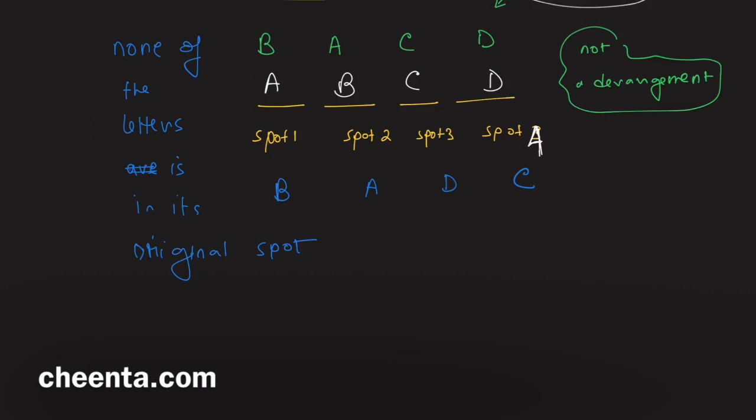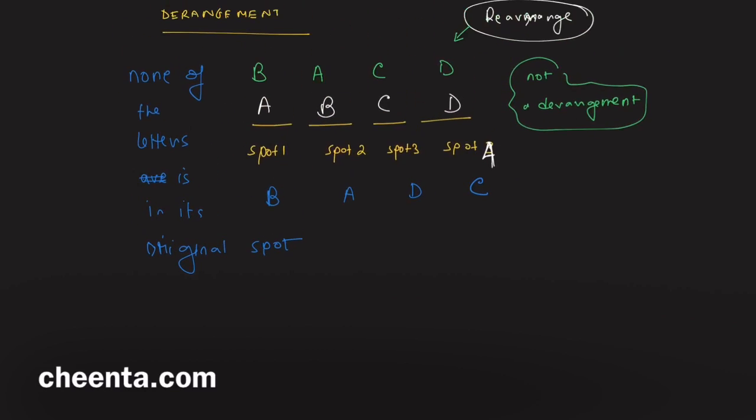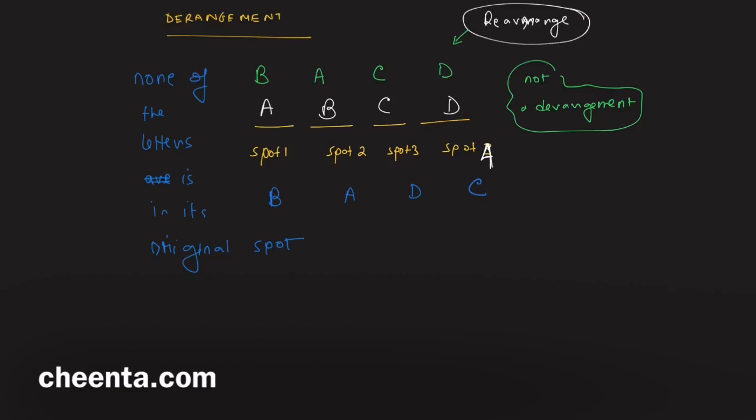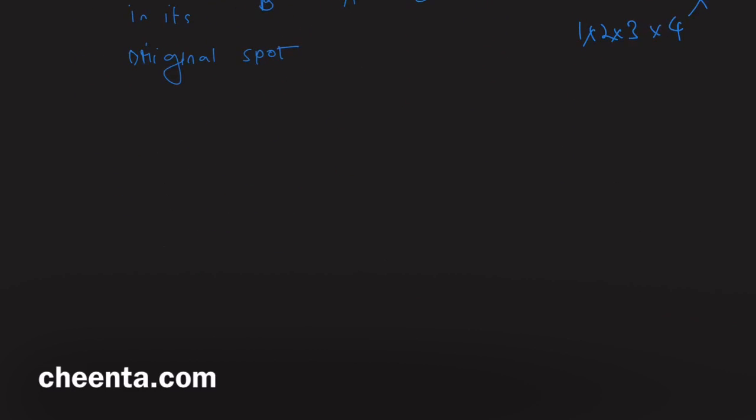To do this problem, you can pause the video here and give this a try. The total number of rearrangements are 4 factorial, which is 24 - that's 1 times 2 times 3 times 4. Some of them are derangements. We use a concept called the inclusion-exclusion principle to understand derangement.